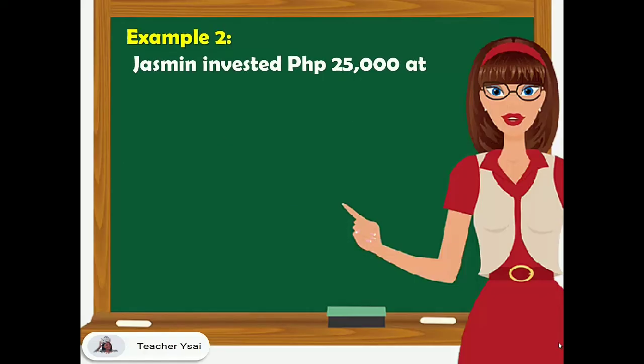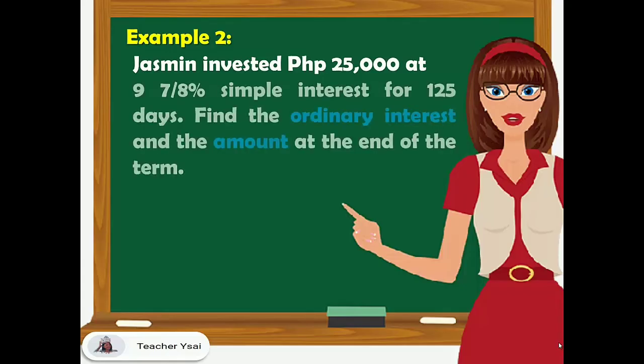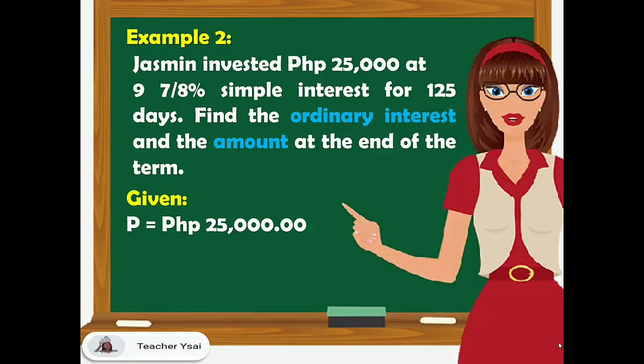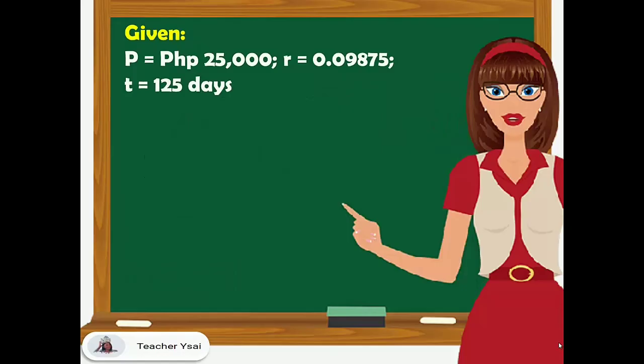Second example: Jasmine invested 25,000 pesos at 9 and 7/8 percent simple interest for 125 days. Find the ordinary interest and the amount at the end of the term. The given: the principal amount is 25,000 pesos, the rate is 9 and 7/8 percent or equal to 0.09875, and T is 125 days.